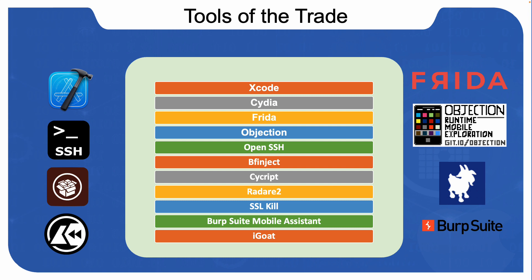Cydia is an application that allows users to download software on jailbroken devices. As we've seen earlier, it's a package manager — once you jailbreak your iPad or iPhone it will pop up. By using Cydia, users can search for applications in online repositories or in the Cydia store.